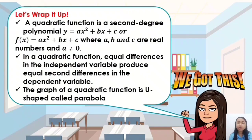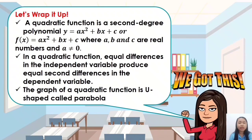Let's wrap it up. A quadratic function is a second-degree polynomial: y is equal to ax squared plus bx plus c, or f of x is equal to ax squared plus bx plus c, where a, b, and c are real numbers and a must not be equal to 0. In a quadratic function, equal differences in the independent variable produce equal second differences in the dependent variable. Lastly, the graph of a quadratic function is U-shaped, called a parabola.